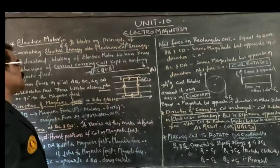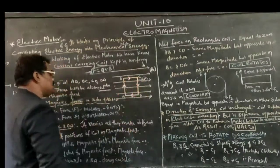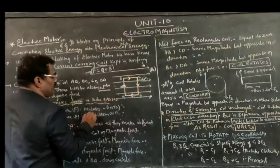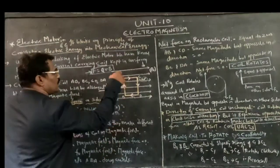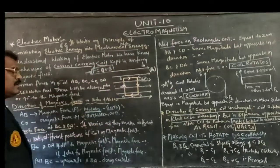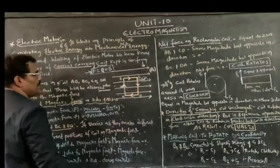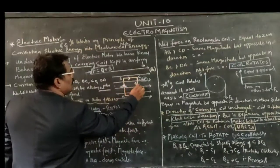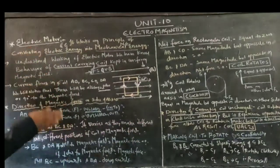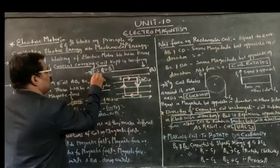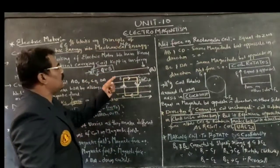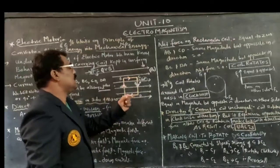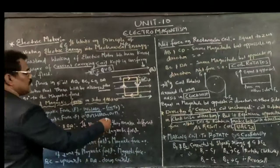The magnetic force operating on the AB surface as well as the CD surface — on the AB surface the magnetic force will be acting in one direction, into the coil and into the magnetic field. Whereas on the CD surface it will be acting in the outward direction, out of the coil and out of the magnetic field.